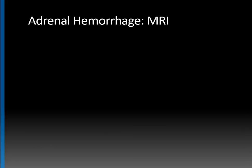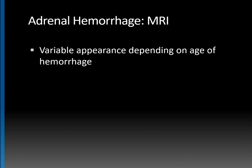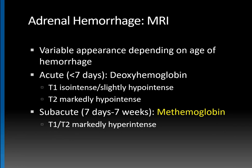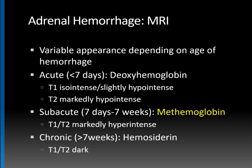Adrenal hemorrhage on MRI has a variable appearance depending on the age of the hemorrhage. With acute hemorrhage, defined as less than seven days, you have predominantly deoxyhemoglobin, and the mass will be T1 isointense to slightly hypointense and T2 markedly hypointense — fairly dark on both sequences. With subacute hemorrhage, defined as seven days to seven weeks, you have predominantly methemoglobin, and the mass will be markedly hyperintense on both T1 and T2 — that's what we have in this case. With chronic hemorrhage, more than seven weeks, you have mostly hemosiderin, which is dark on T1 and T2. In real life, you often get a mix of different signal intensities, especially if there's ongoing bleeding or re-bleeding.